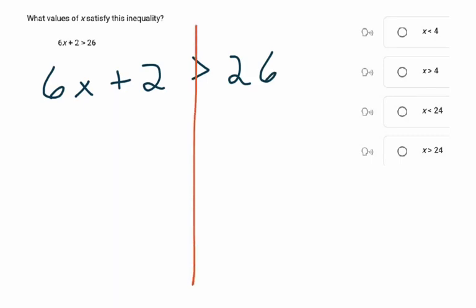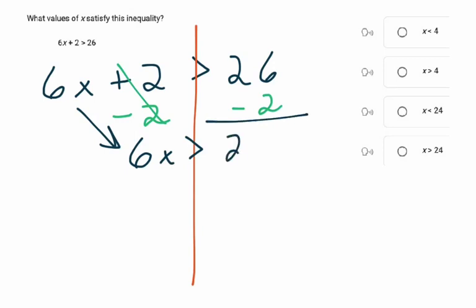So we'll draw the line down here. First step's going to do the inverse of 2, so let's subtract 2. Subtract 2 there, it's going to cancel out. So I'm going to bring down 6x, still greater than, 26, I'm going to do a straighter line there, 26 minus 2 is 24.